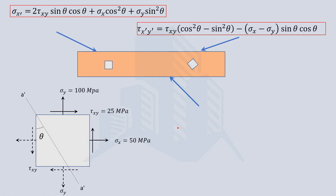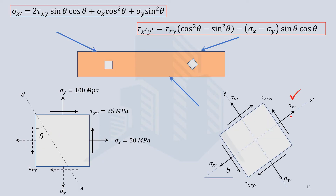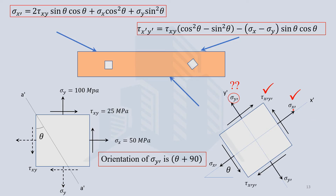Taking the same object, if we want to calculate the stresses at angle theta and we are given the initial stress data, we simply substitute into these equations to get the normal and shear stress on that inclined plane. However, we have only derived formulas for sigma x-dash and tau x-dash y-dash. To find the normal stress in the y-dash direction on the rotated element, we replace theta with theta plus 90 degrees in the sigma x-dash equation.